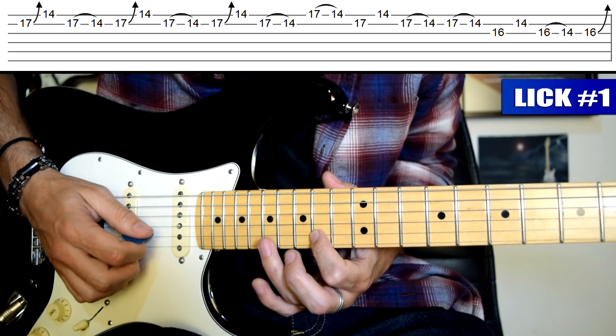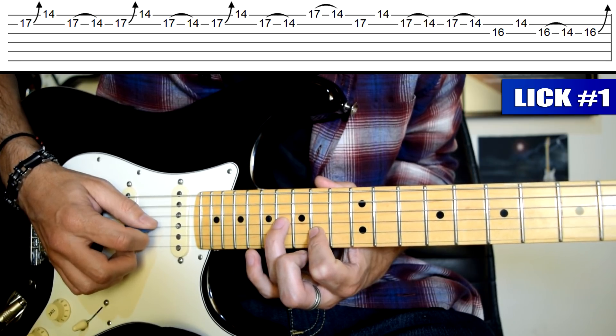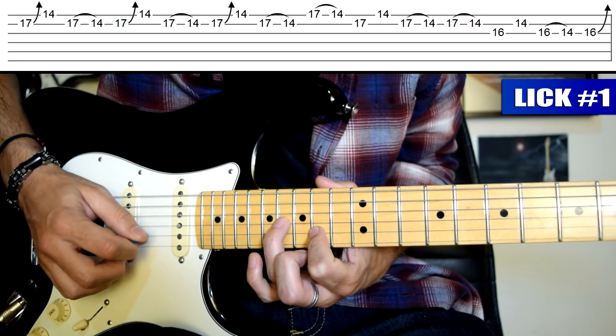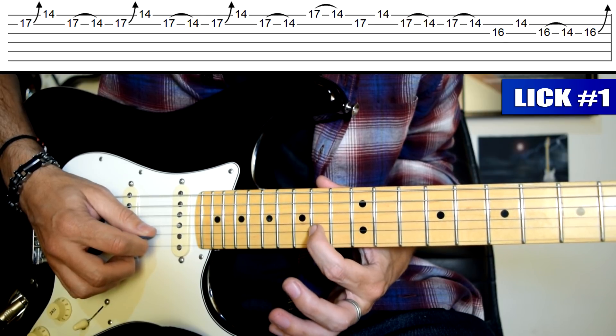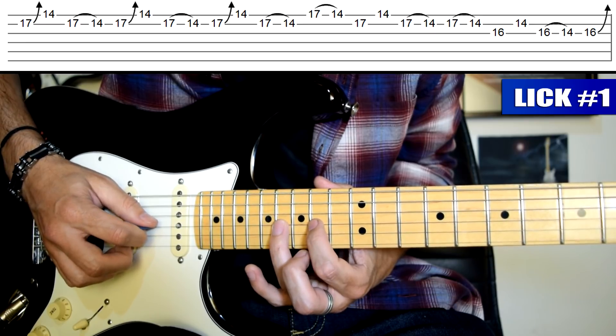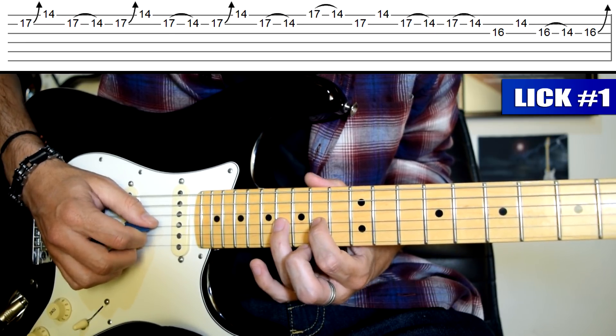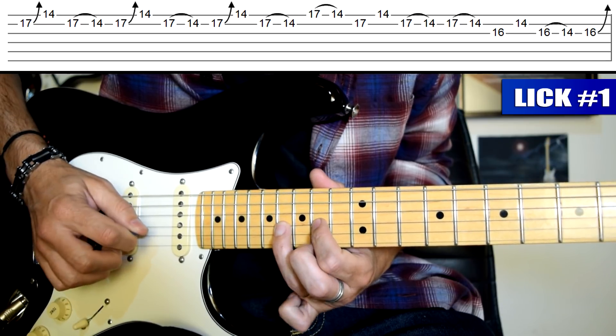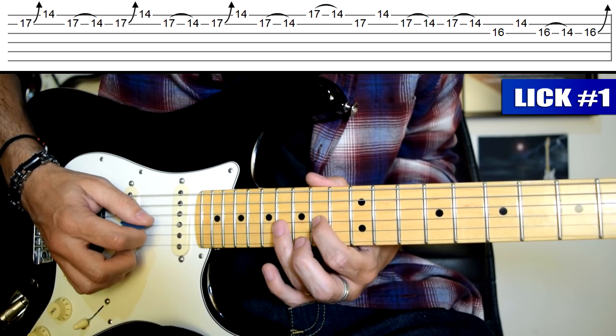Levanto y pellizco con el dedo 3 la cuerda 2. Sin quitar el dedo 1, el dedo 3 lo llevo al traste 16 de cuerda 3, púa abajo en cuerda 3. Levanto el dedo 3, púa arriba en cuerda 2 donde está el dedo 1 en el traste 14. Dedo 3 traste 16 y dedo 1 traste 14 de cuerda 3, púa abajo en cuerda 3.